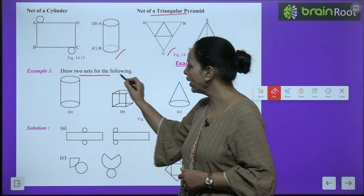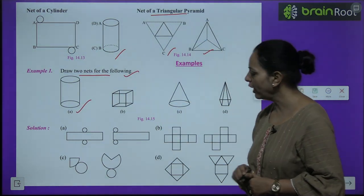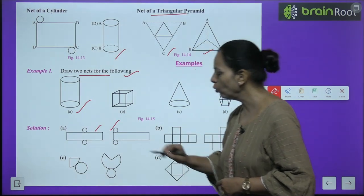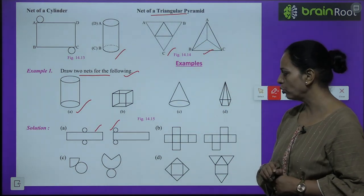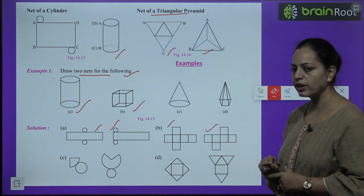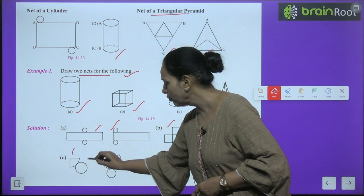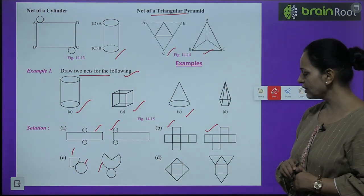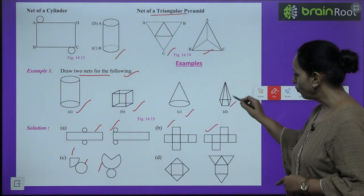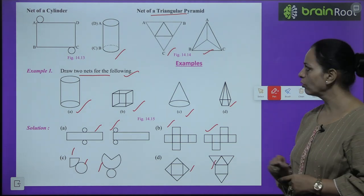Example 1: Draw two nets for the following. In part A, a cylinder is given - draw its two nets. You can do it. In part B, a cube is given - you can draw six squares. In part C, a cone is given - we can draw it like this with this one.